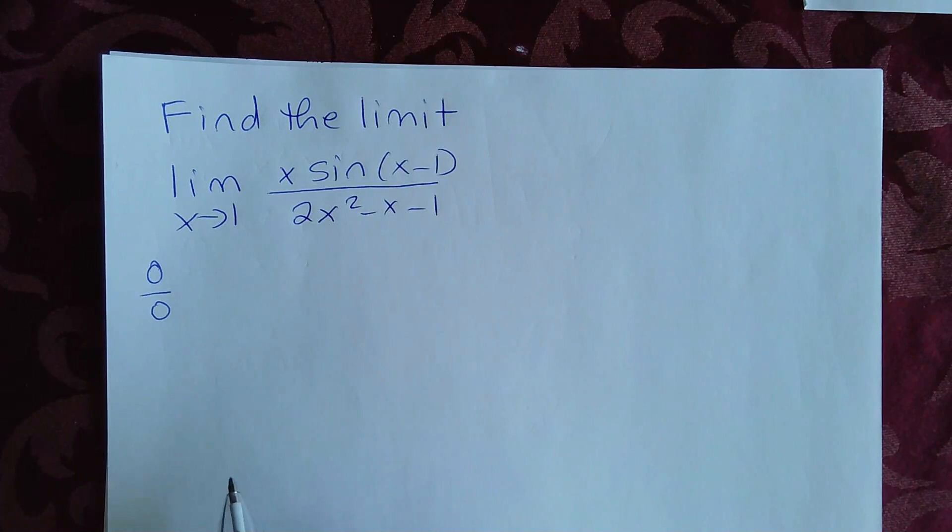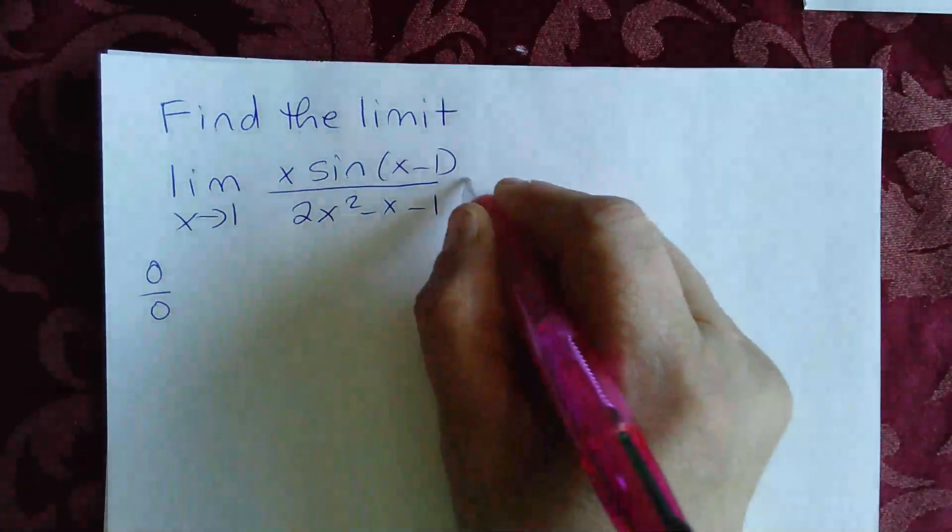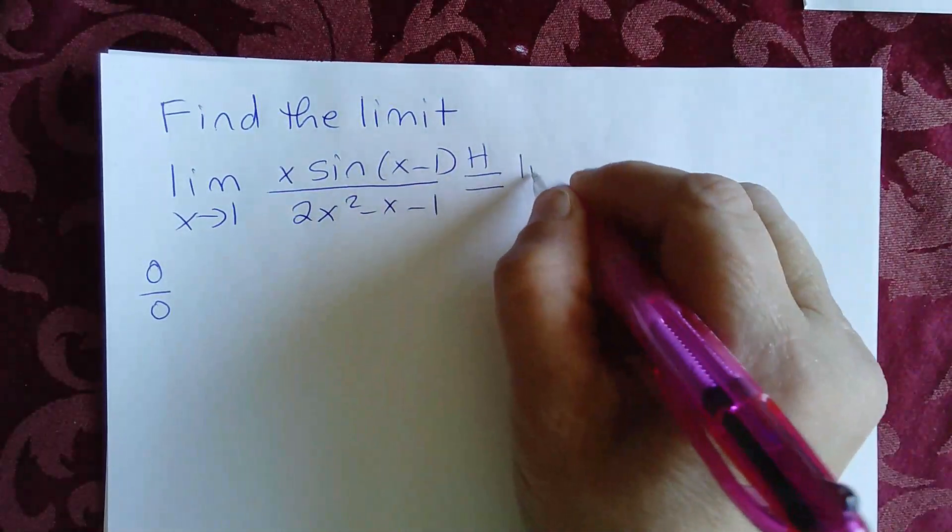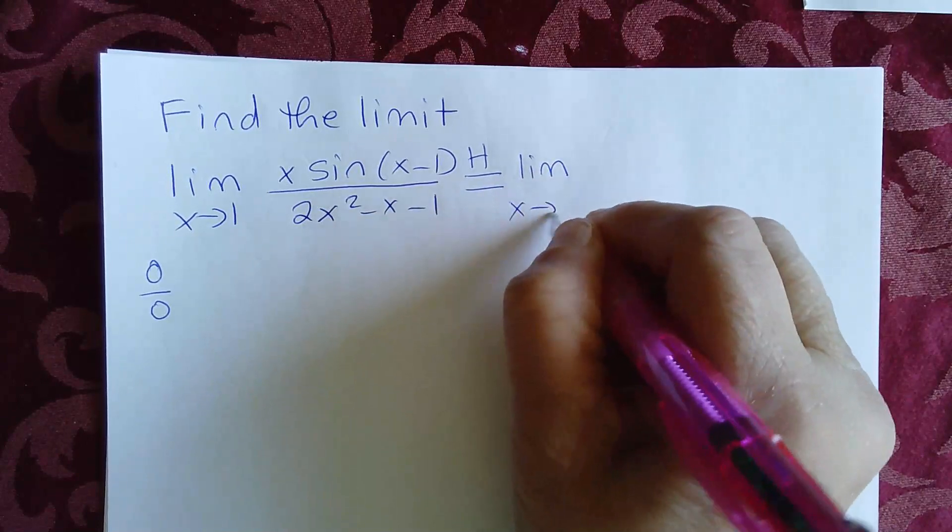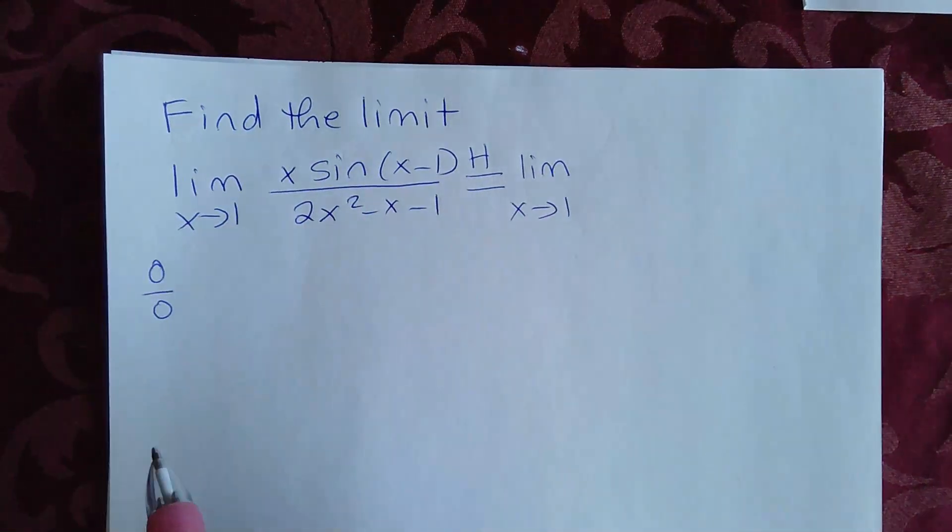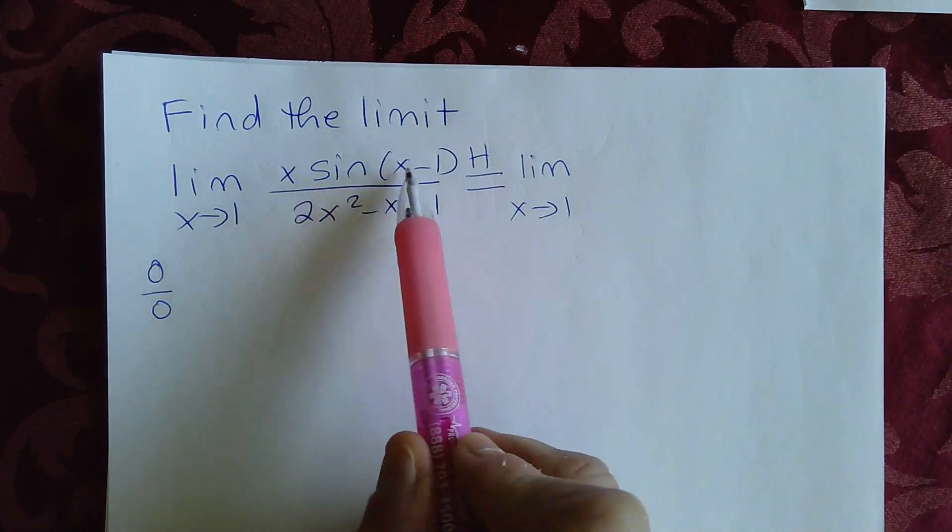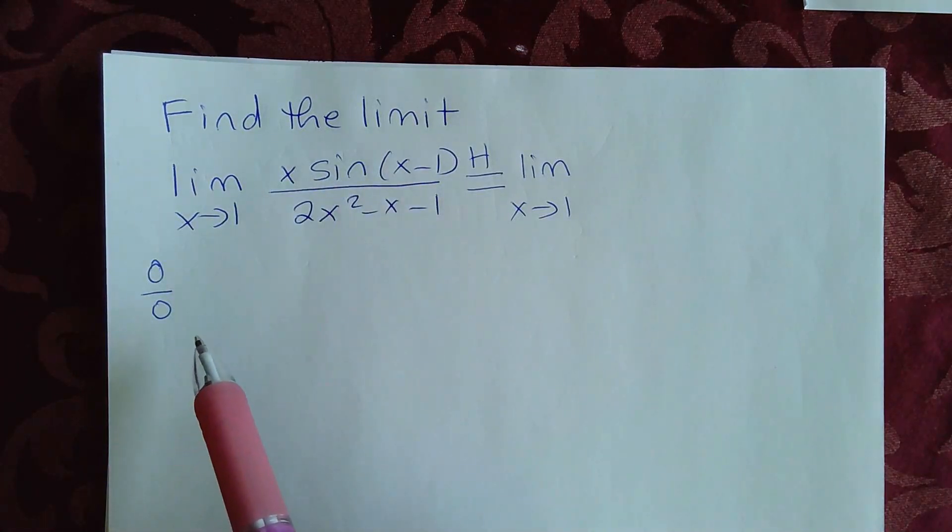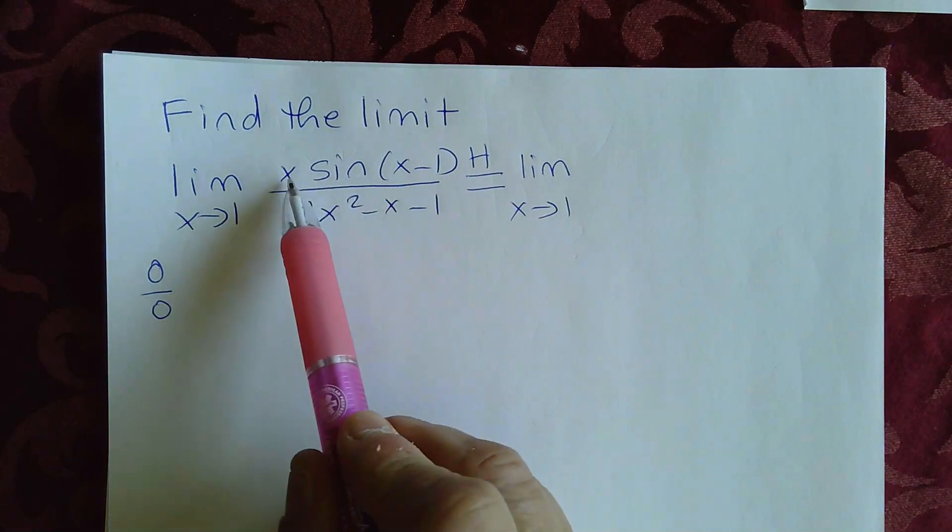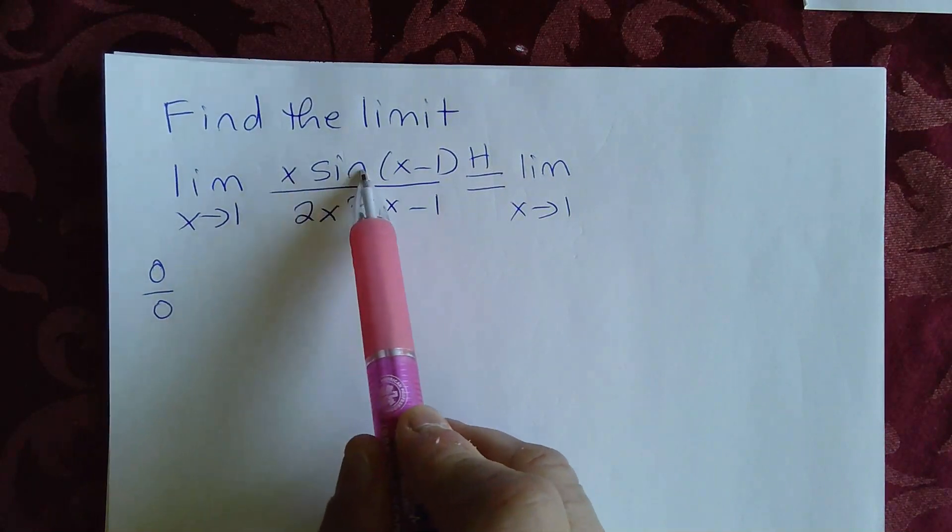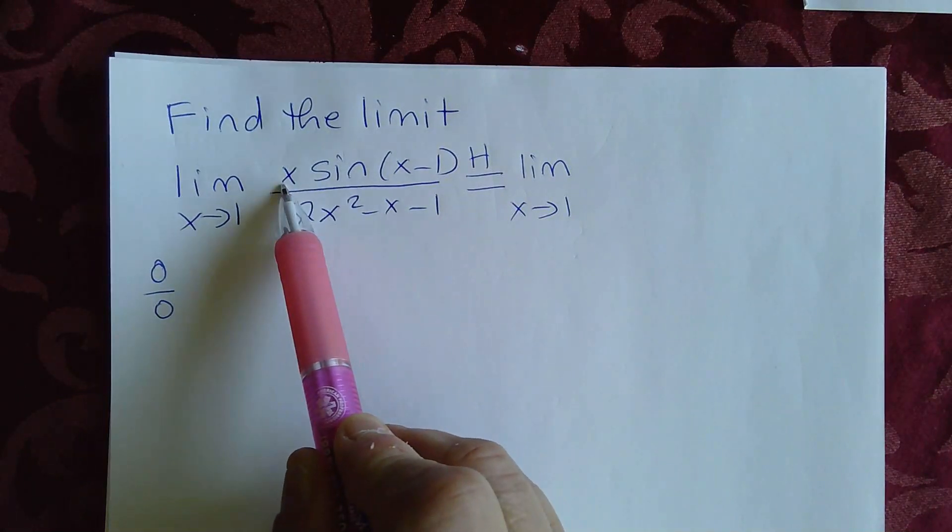So L'Hopital's rule does apply here. So we go ahead and start with the limit as x approaches 1, taking the derivative of the numerator. Now if you notice here, what we have is a product, so you're going to use the product rule. The derivative of the first times the second plus the first times the derivative of the second.